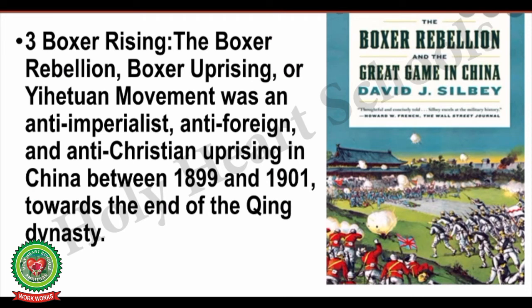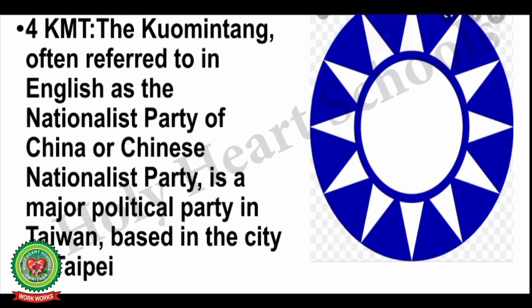The next term is Boxer Rising. The Boxer Rebellion, also called the Boxer Uprising or Yihetuan Movement, was an anti-imperialist, anti-foreign and anti-Christian uprising in China between 1899 and 1901 towards the end of the Qing dynasty. By the Boxer Rising, the Chinese for the first time stood against foreign powers, starting a movement against Christianity and against all the European powers ruling China. The next term is KMT — the Kuomintang, often referred to as the Nationalist Party of China, a major political party based in Taiwan.